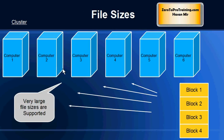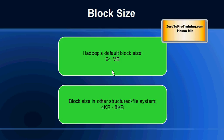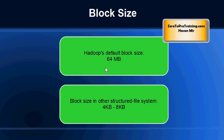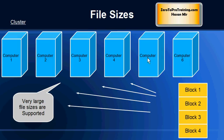Block size in the Hadoop file system is set to 64 megabytes by default, though you can change that value. If you compare this with block sizes in other structured file systems, you will notice that this is multiple times higher. In coming sessions we will talk about how a larger block size results in advantages. In short, it results in faster streaming reads because of this higher block size.